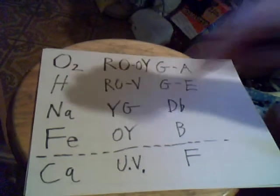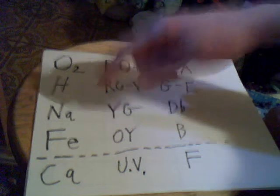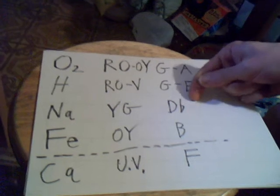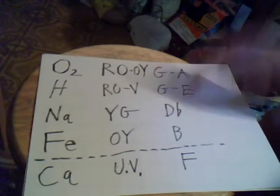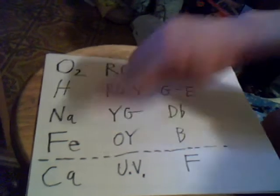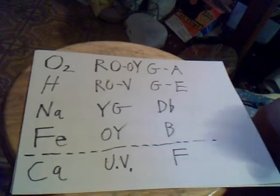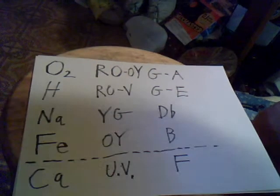When we go to sodium, that's yellow green, that's the key of D flat. Not as much of that as hydrogen, of course. Same thing with iron. Iron is orange yellow, that's blue. And then of course we have calcium at the bottom, and that's ultraviolet, and that's in the key of F.